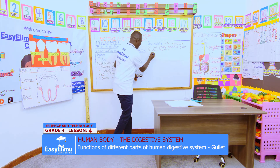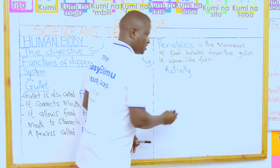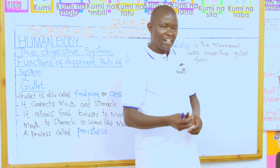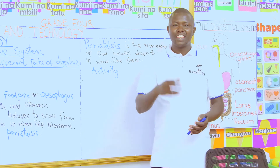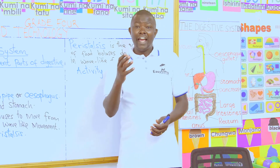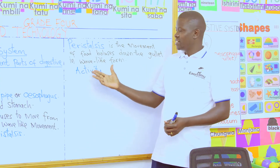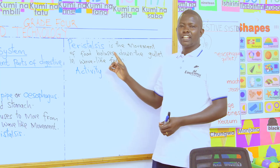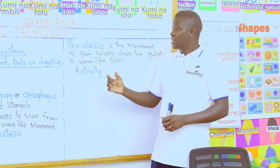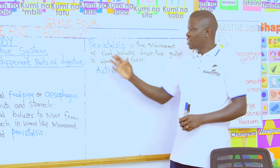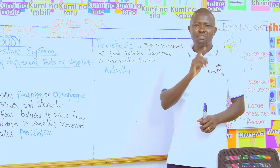Activity for us to do: when you go home, kindly ask your parents to help you with their phone and watch a video of how food goes down the esophagus, forming the wave-like movements — how peristalsis happens down the esophagus all the way to the stomach. And that marks the end of our lesson. Let us meet again. Bye-bye.